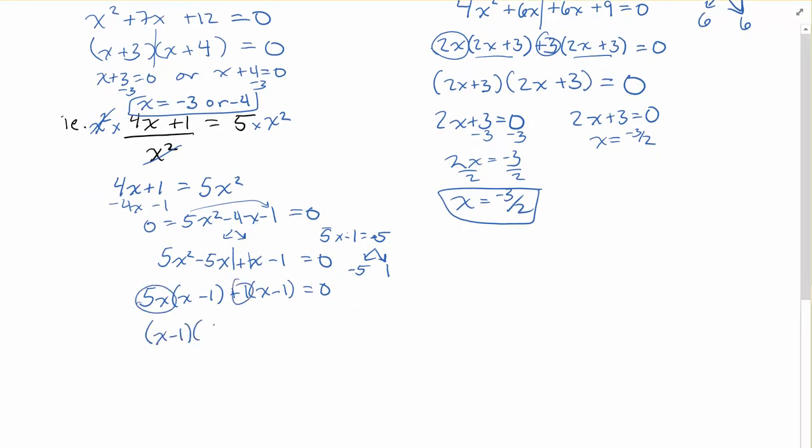And again, splitting those and setting them both equal to 0. 5x plus 1. Here I get x is equal to positive 1, and here I'm going to get minus 1, and then 5x is equal to minus 1, divide by 5, divide by 5. x is equal to negative 1 fifth, or 1, for my final answer on that one.